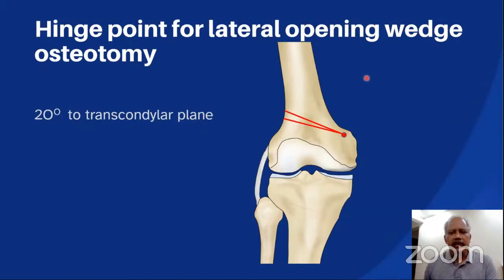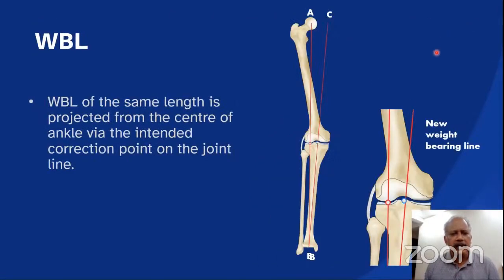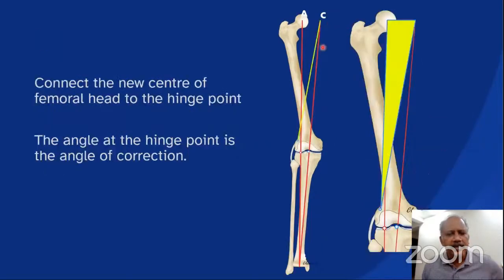This isosceles triangle results in good cortical contact when the osteotomy is closed, which is very important for stability and to prevent subsidence and inadvertent overcorrection. For a lateral opening wedge osteotomy, the hinge point is 1 centimeter at the medial epicondyle, and the osteotomy line is around 20 degrees to the transcondylar line. The first step is to draw the weight-bearing line from the center of the femoral head to the center of the ankle. The same line is projected from the center of the ankle via the intended correction point of the joint line.